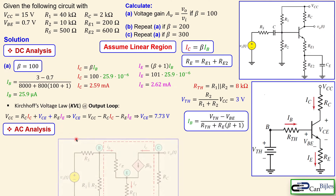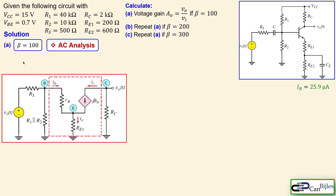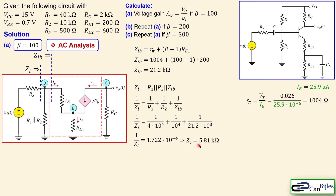Now for the AC analysis — there is one key change. The circuit looks like example number two, but this time the emitter resistor in the AC model is not 800 ohms but just 200 ohms (RE1), because RE2 is bypassed by the capacitor. So the calculations are all similar; only the value of the unbypassed emitter resistor has changed. The impedance looking into the base is ZIB, which depends on RPI and RE1.